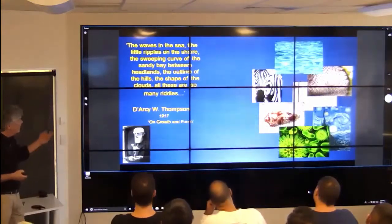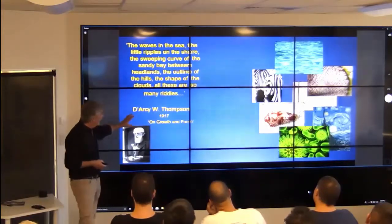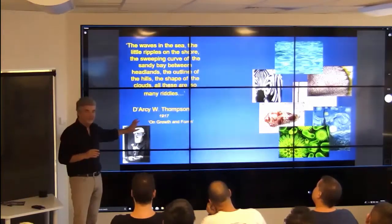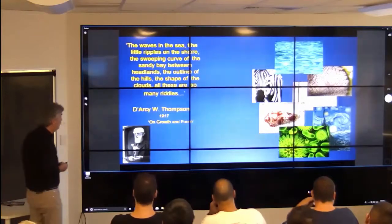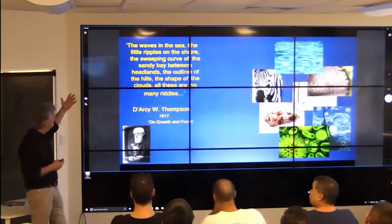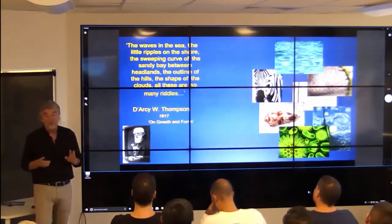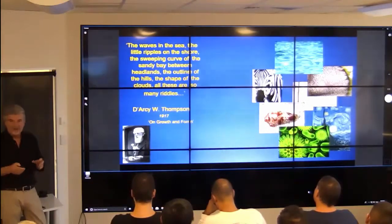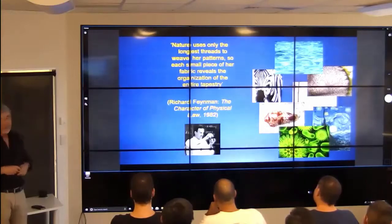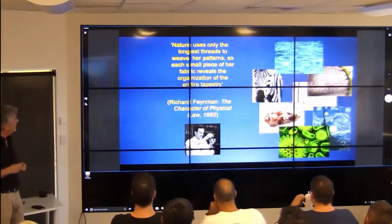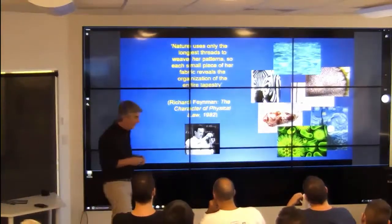One of my heroes is D'Arcy Thompson, whose book last year was 100 years old and we had a big party on that in Europe. That book, on Growth and Form, is really great — it describes how in nature, growth and form play a role in function. He has the same kind of observation: the waves in the sea, the little ripples on the shore, the sweeping curve of the descending bay between the headlands, the outline of the hills, the shape of the clouds — all these are so many riddles. Richard Feynman had the same kind of observation where he said: nature uses only the longest threads to weave her patterns, so each small piece of fabric reveals the organization of the entire tapestry.